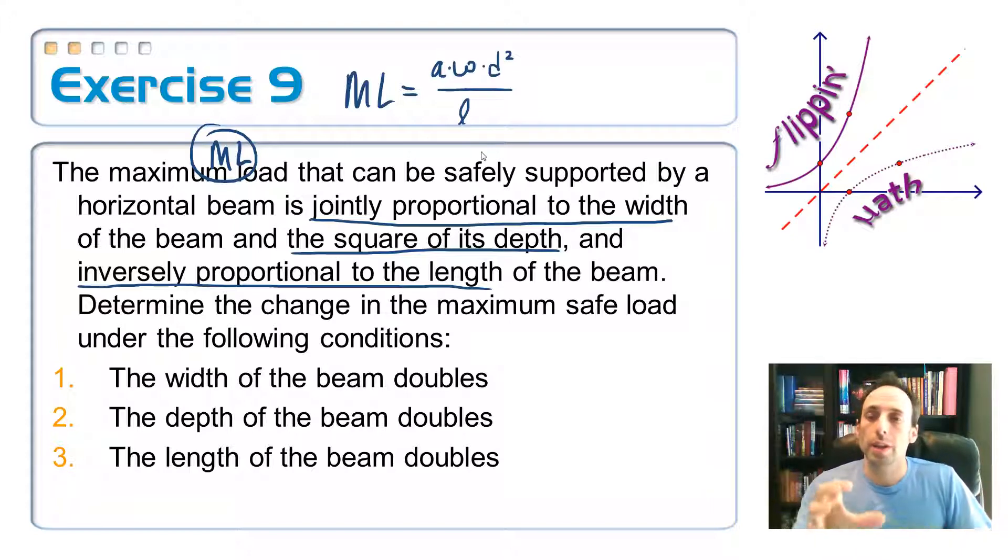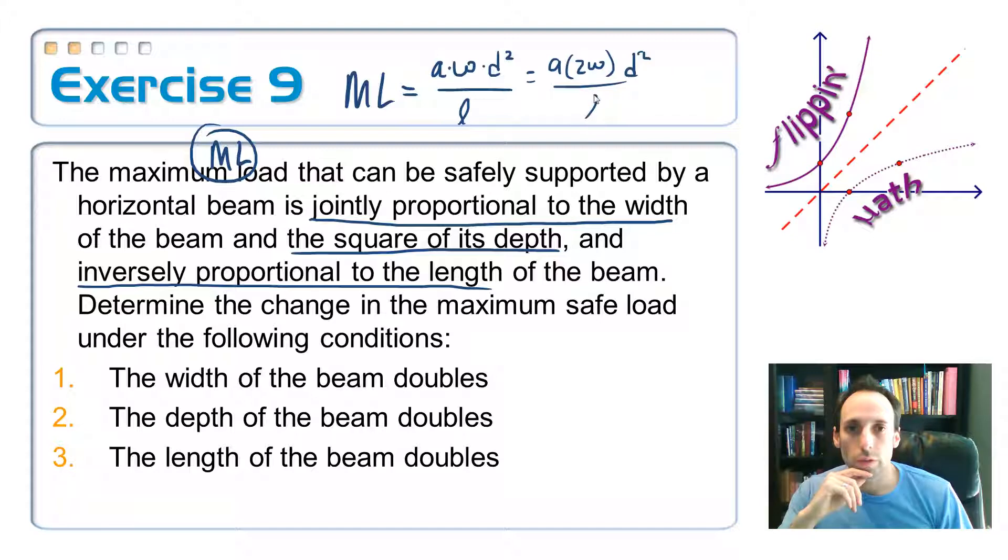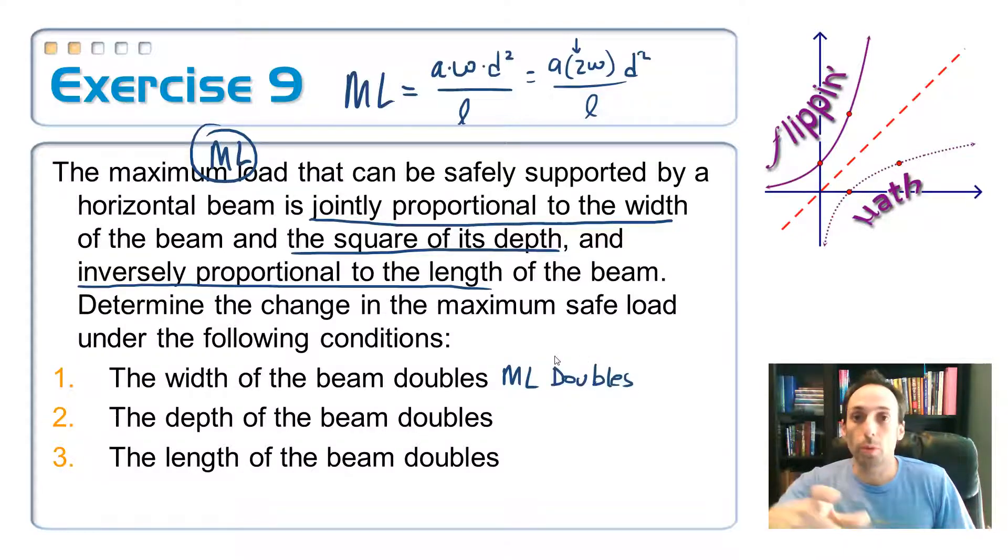This question is about, now once I have that equation, like if I change one of the quantities, how does it change something else? How does it change the maximum load? So, the first one, what if the width of the beam doubles? So if I put in a 2 for W, what happens to the whole thing? So if I put in A times 2W times D squared all over L. Now let's compare that to the first one. What's the only difference? The only difference is that there's a 2 in here. So this means that the maximum load is 2 times bigger. So it also doubles. So maximum load doubles. If you double the width, you double the load that that beam can carry.